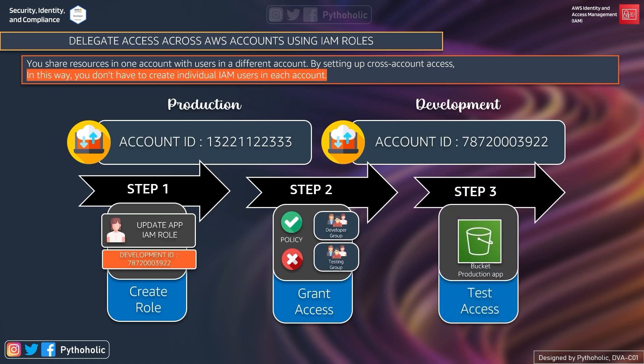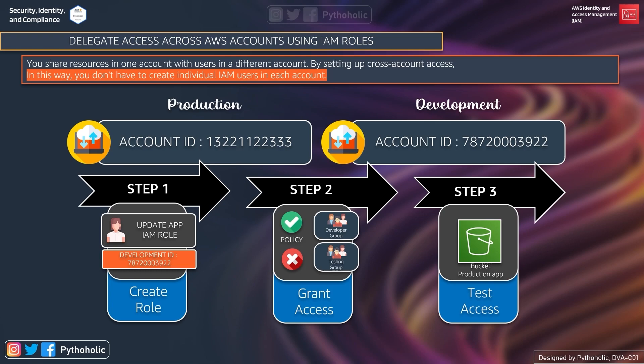Step three is to test access by switching roles. Once the roles are set up, when both the dev team and the testing team try to assume the role, the policy determines that only the dev team will have access. With these three steps we can delegate access across AWS accounts using IAM roles.